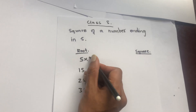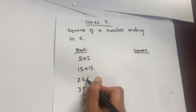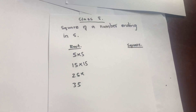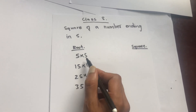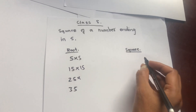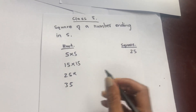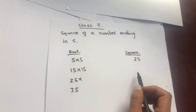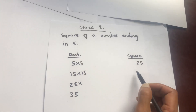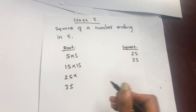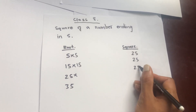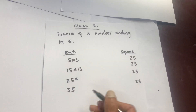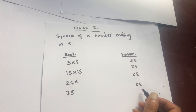The square of a number is found by multiplying it by itself: 5×5, 15×15, 25×25 — that is called a square. Now, if you want to find the square of a number that ends with 5, the last two digits will always be 25. Any number you take that ends with 5, its square will always have the last two digits as 25.